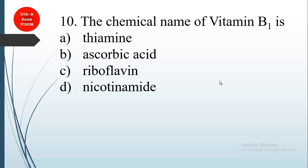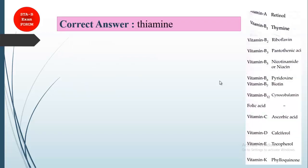So the correct answer will be thiamine. So these are the vitamin chemical names. You can see thiamine is vitamin B1. If they ask vitamin B5, what is niacin? And vitamin B12 is also common. That's cyanocobalamin. Wherever you find amine, these are basically vitamin B.